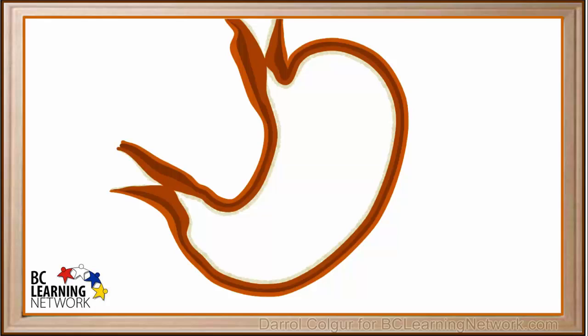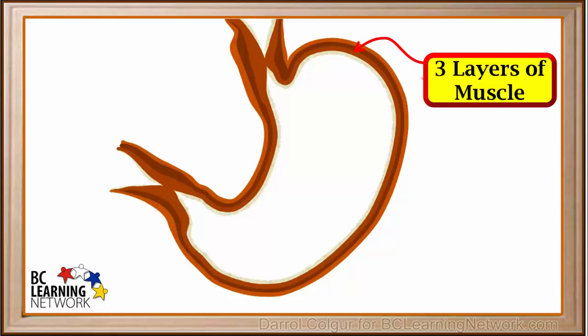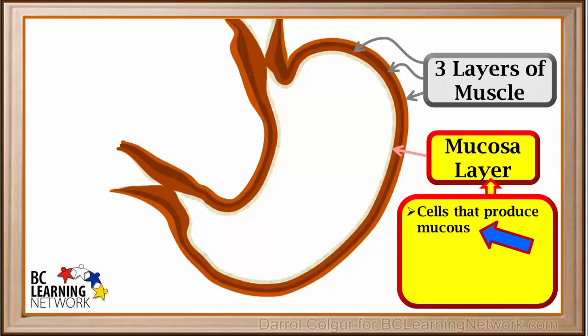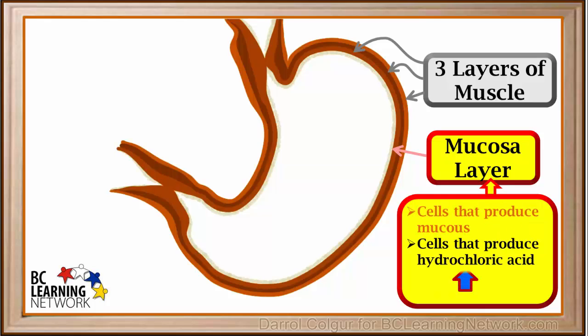Here we'll look at a cross-sectional view of the stomach. The stomach wall consists of three layers of muscle fibers. Inside the muscle layers is a layer called the mucosa layer. This mucosa layer contains cells that produce mucus, cells that produce hydrochloric acid, and cells that produce a substance called pepsinogen.